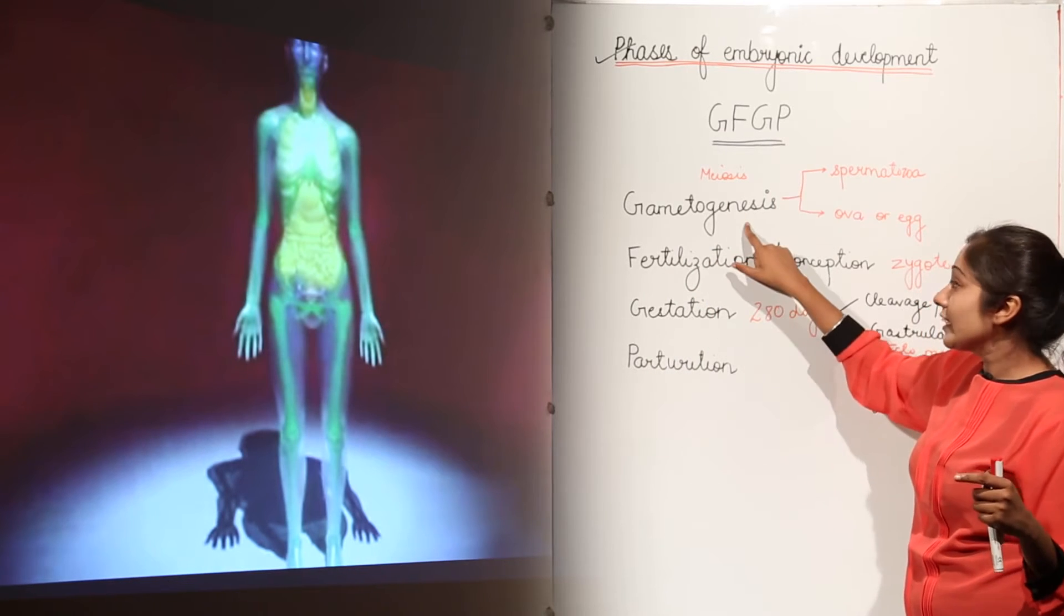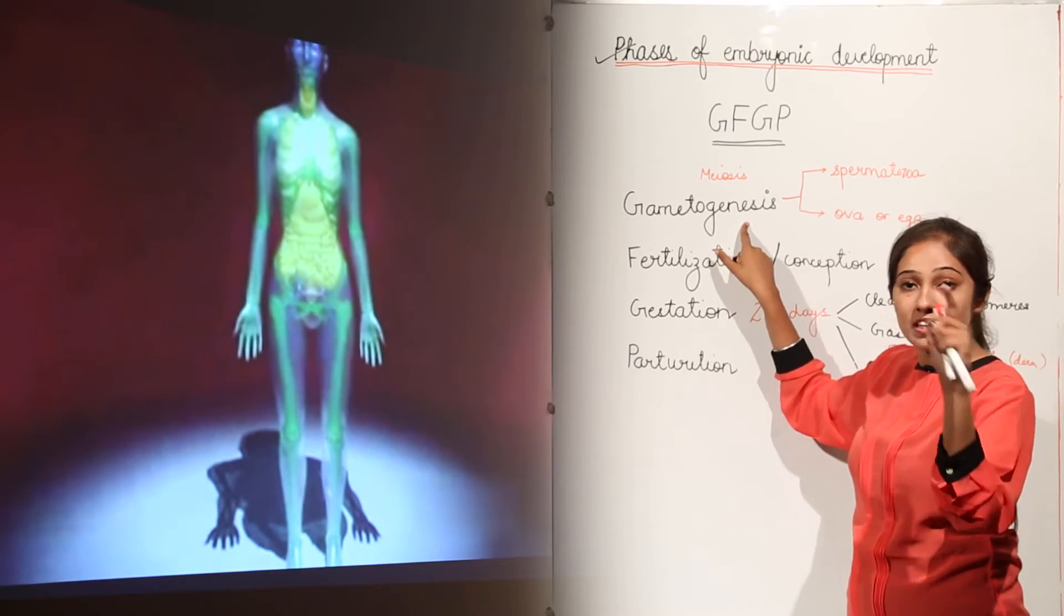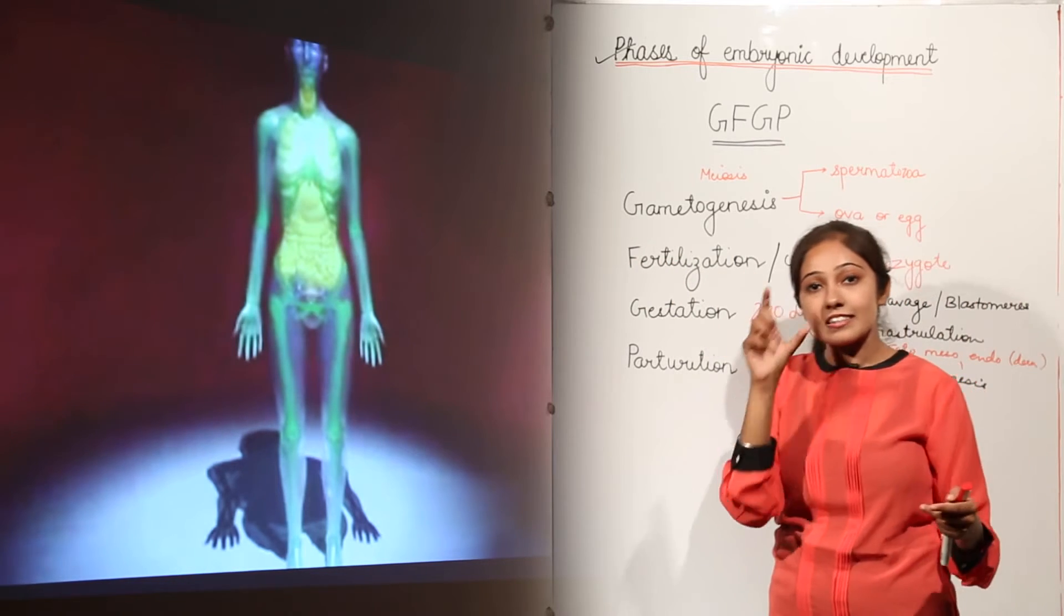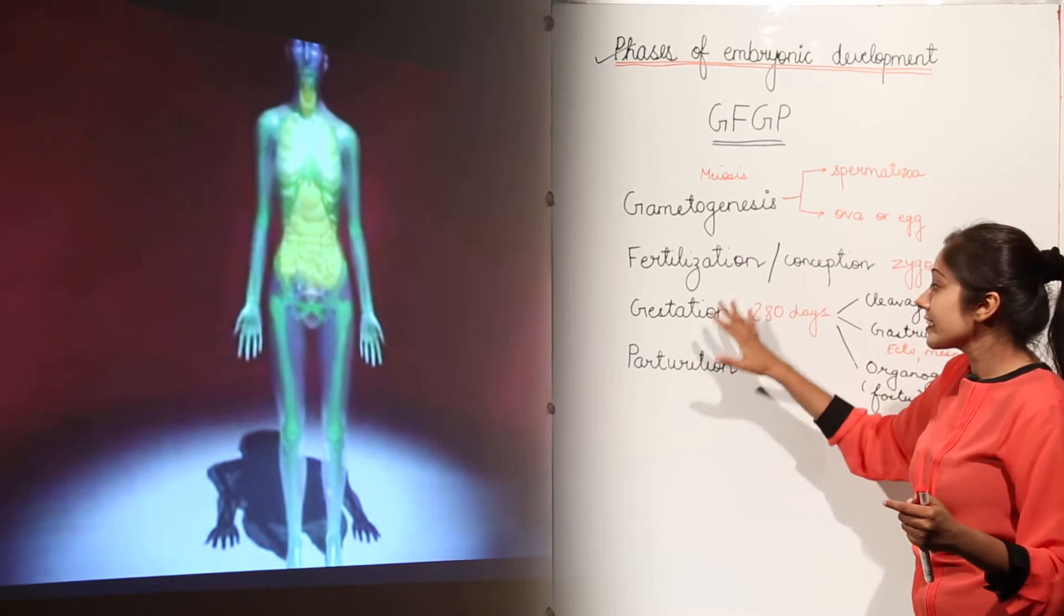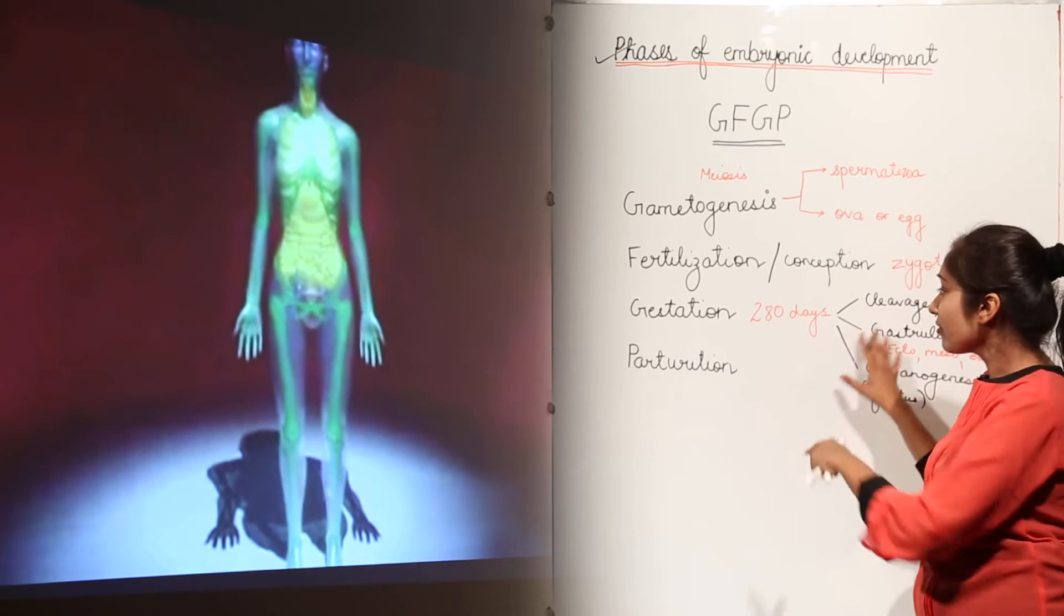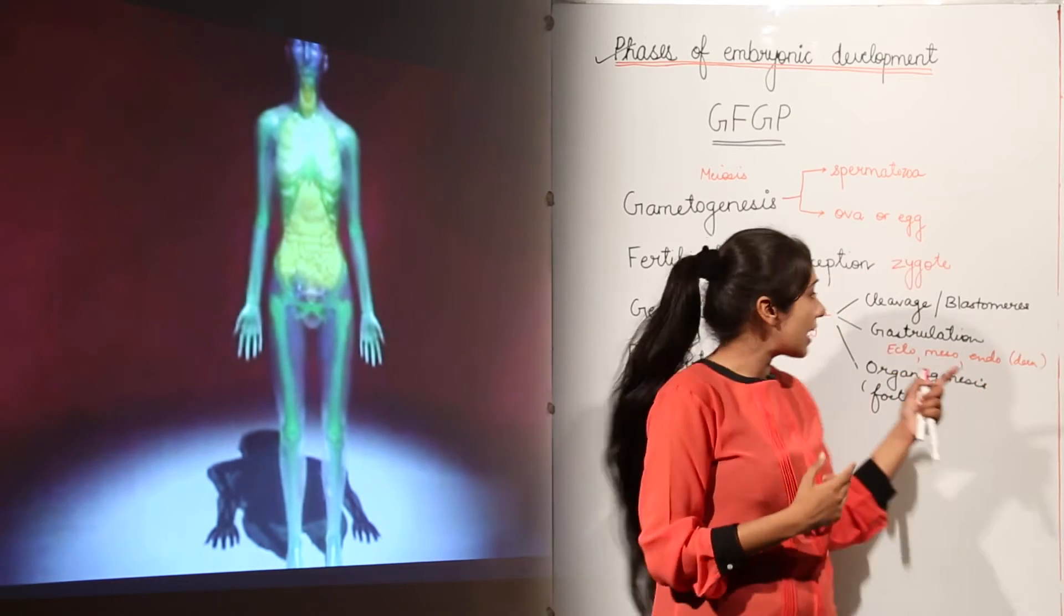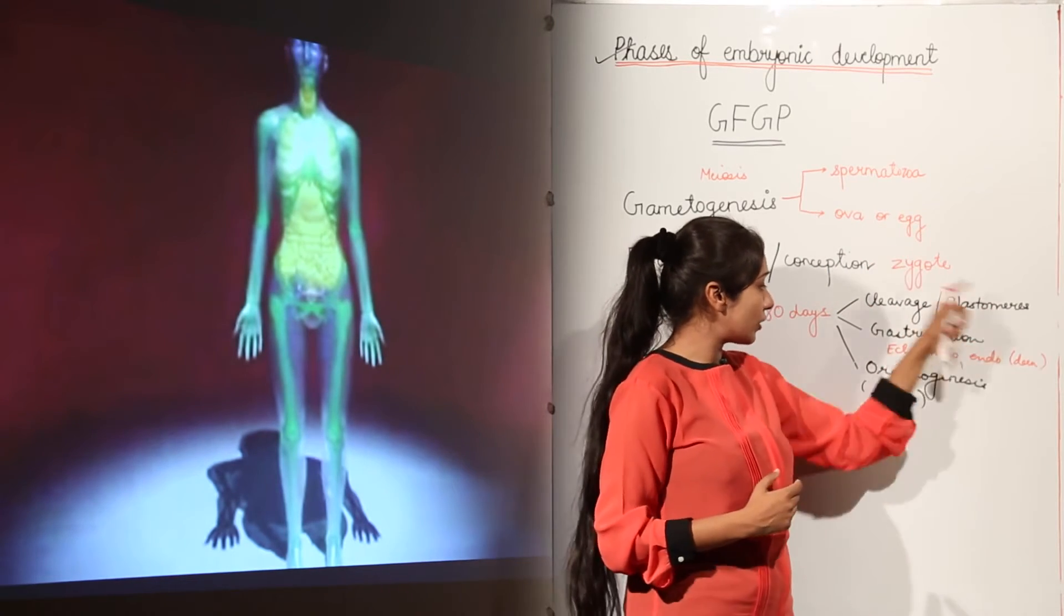So remember that during gametogenesis, we talked about gametes, sperms and eggs, and then fertilization is a fusion for the formation of one single cell that is zygote. And then gestation which is for 280 days, the development of an embryo, complete embryo in which you have the sub-phases: cleavage, blastomeres, gastrulation,